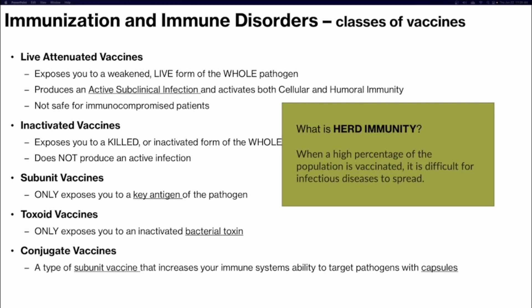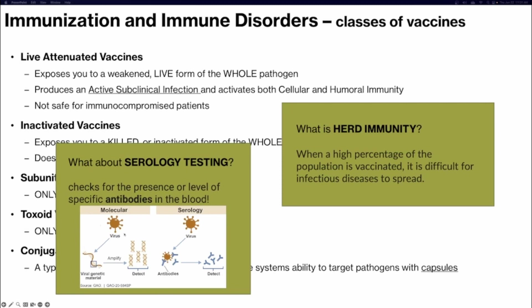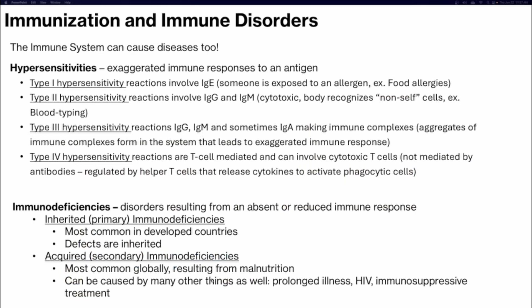Know about herd immunity — when a high percentage of the population is vaccinated, making it more difficult for infectious diseases to spread. However, not all infectious diseases are stopped by herd immunity. For example, tetanus is not communicable and doesn't go from person to person — you get it from the environment. So even if everyone else is vaccinated against tetanus, if you're not vaccinated, you have just as much chance of being infected. Serology testing is looking for the presence or level of antibodies in the blood — looking to see if you have developed antibodies and activated a humoral immune response toward a pathogen.